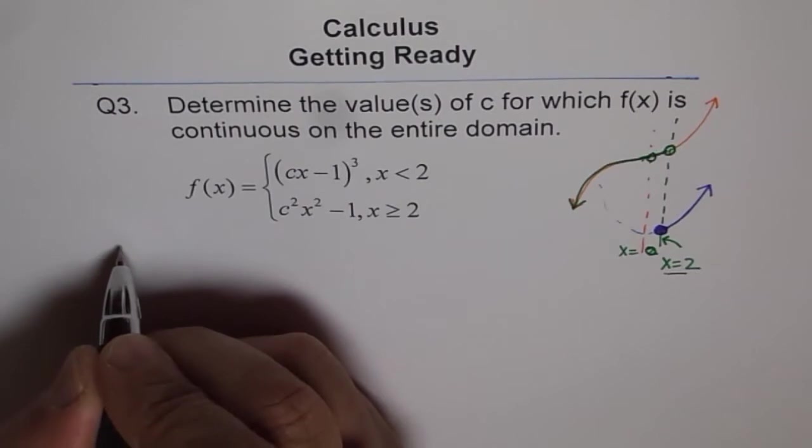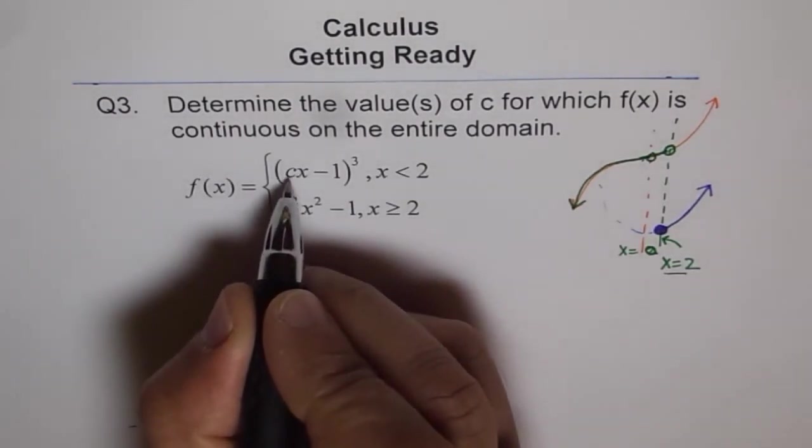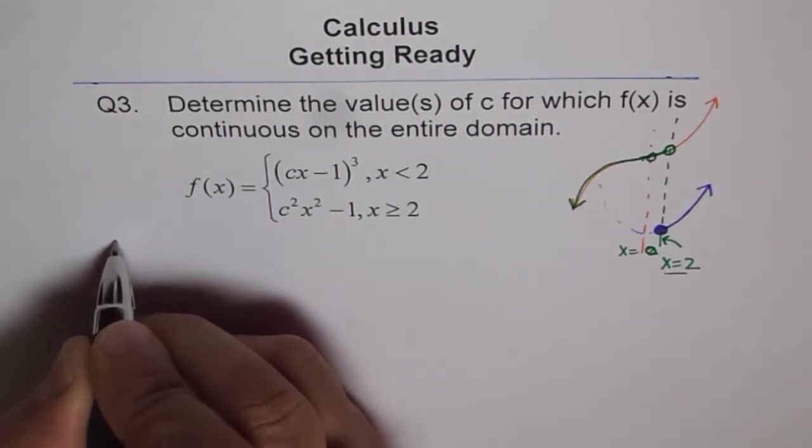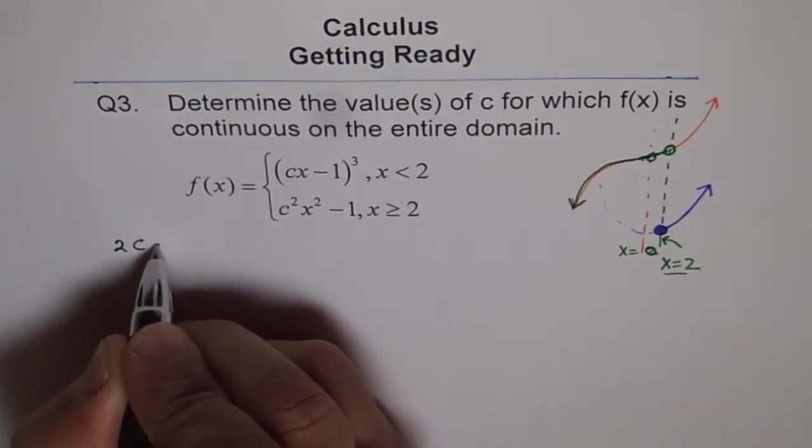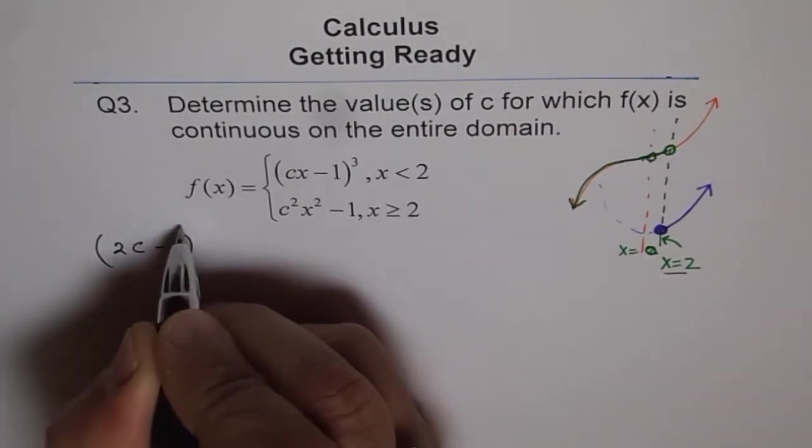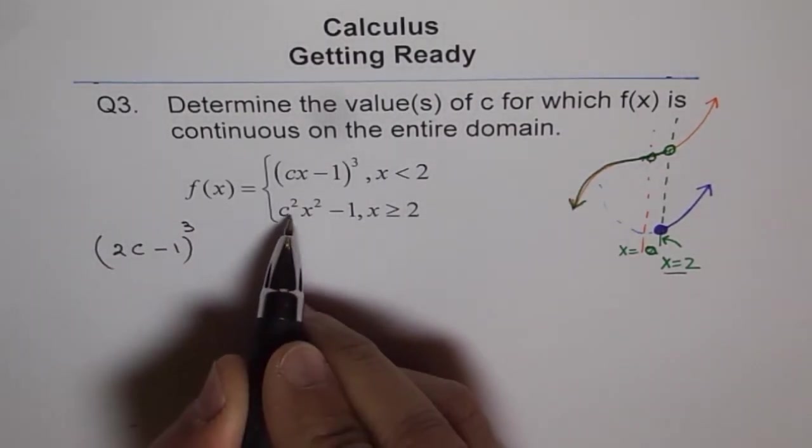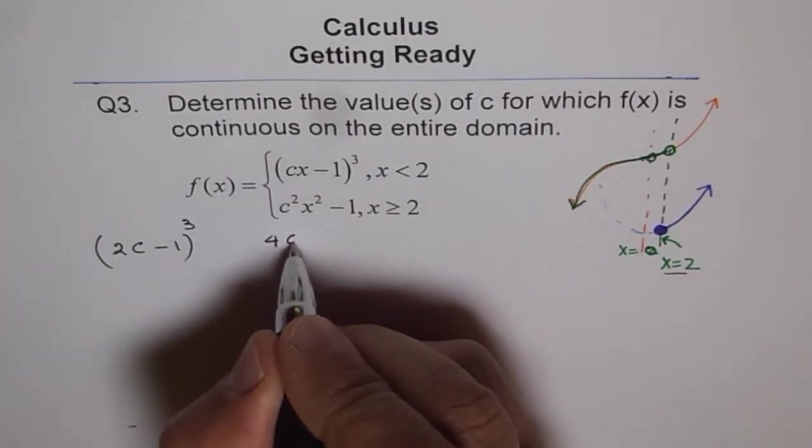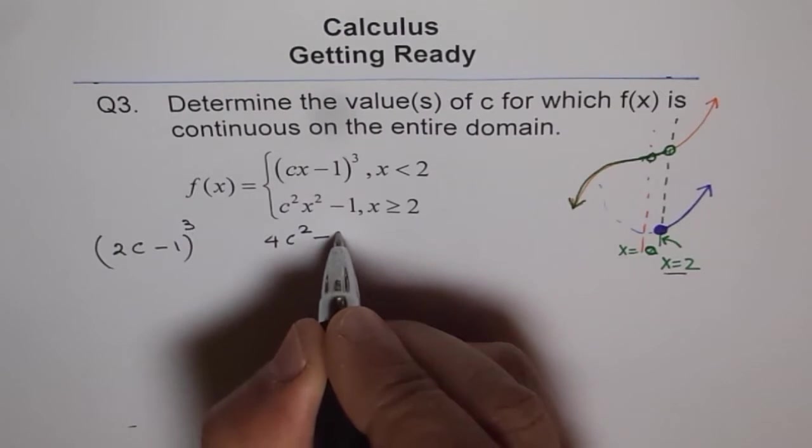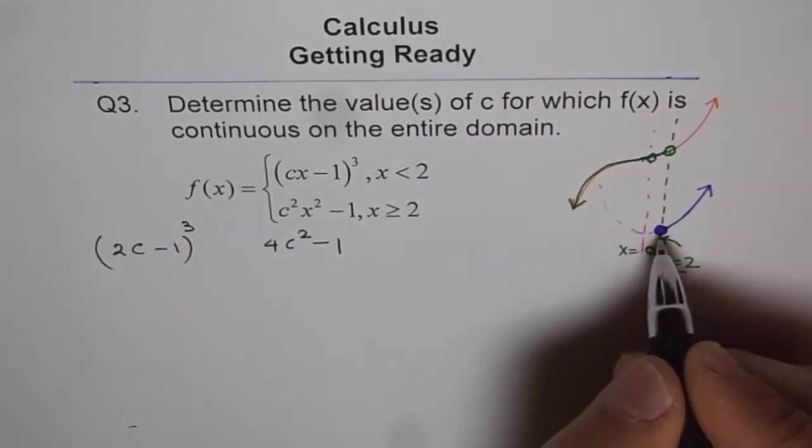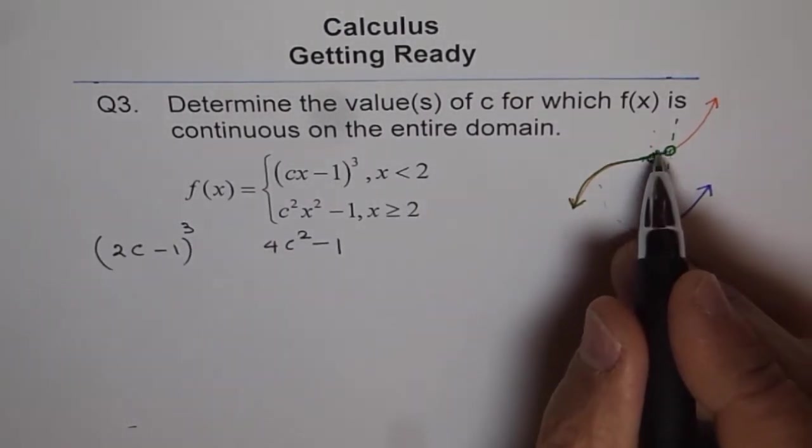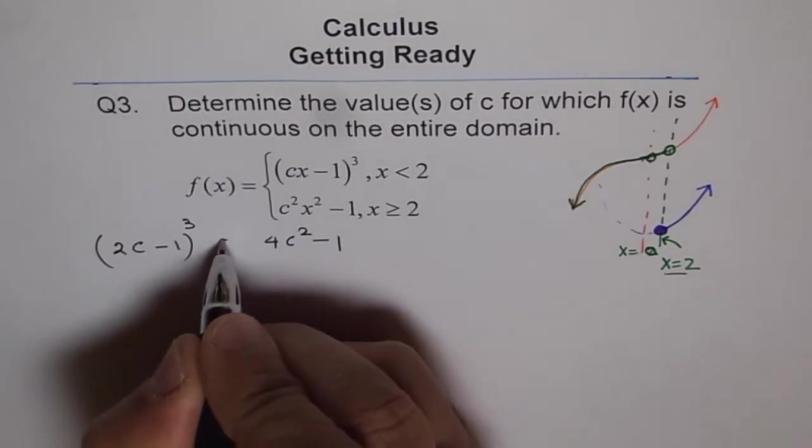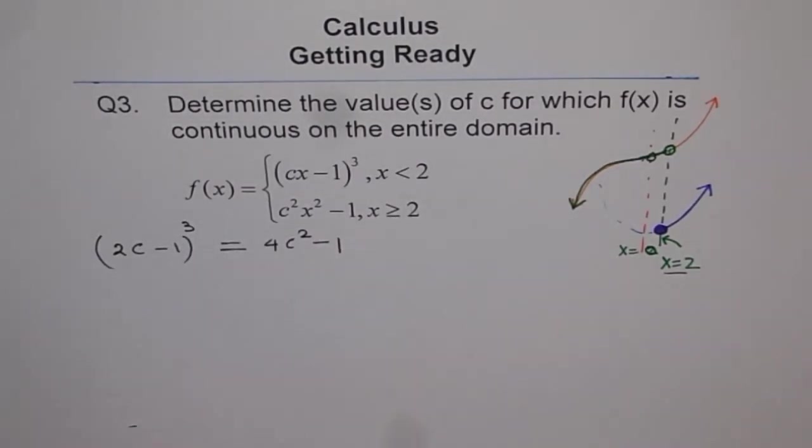We will put x equals 2 here. So if I put 2 here, I get c times 2, which is 2c. So we get (2c - 1)³. And here, if I put 2, 2 squared is 4. So I get 4c² - 1. And at 2, we want them to be at the same point, same y value. So we can say this is equal to this.